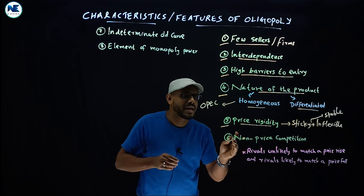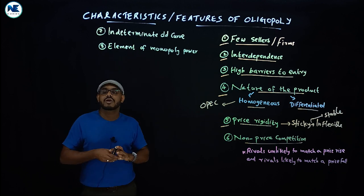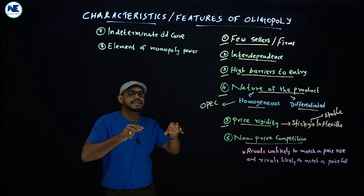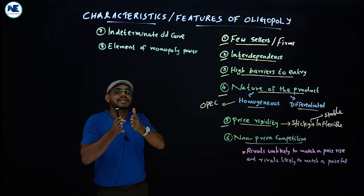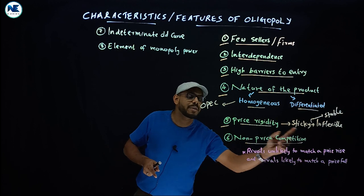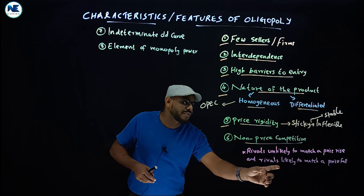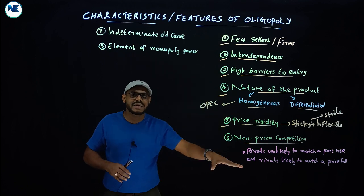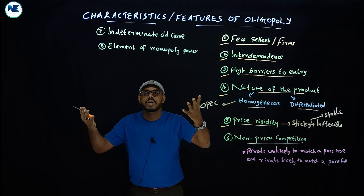The sixth important feature is non-price competition among firms. We have discussed this under monopolistic competition as well, where selling cost was a key feature. Here in oligopoly, given the high level of interdependence, rivals are likely to match any price fall. That is why firms extensively use non-price competition techniques to promote their sales and capture market share.